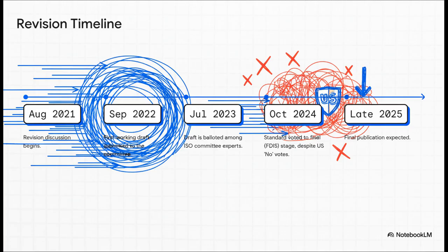But here's where it gets really interesting. Look closer. The United States has consistently voted no at every single stage. That is a massive red flag, a huge point of contention we'll touch on, and it tells you right off the bat this is way more than just a simple update.